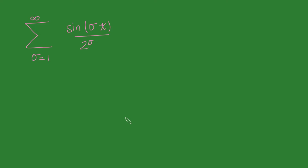Hi, thanks for joining me today. I've got an infinite sum that I want to evaluate: the sum from sigma equals 1 to infinity of sine of sigma x over 2 to the sigma. The trick to this is we're going to be using Euler's formula, which says that e to the i theta is the same as cos theta plus i sine theta.